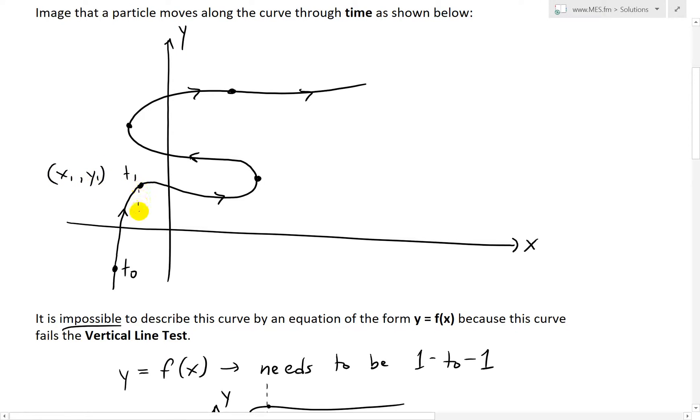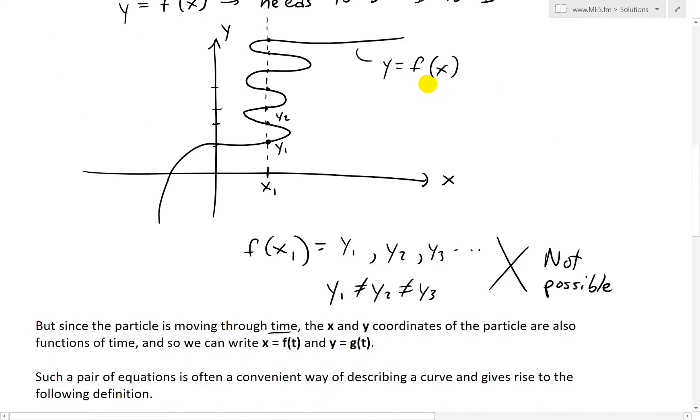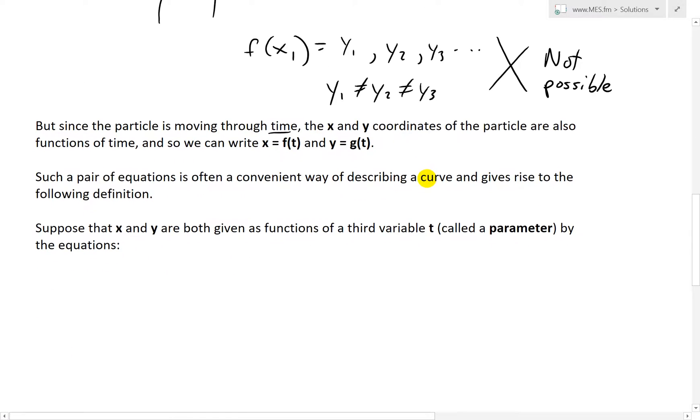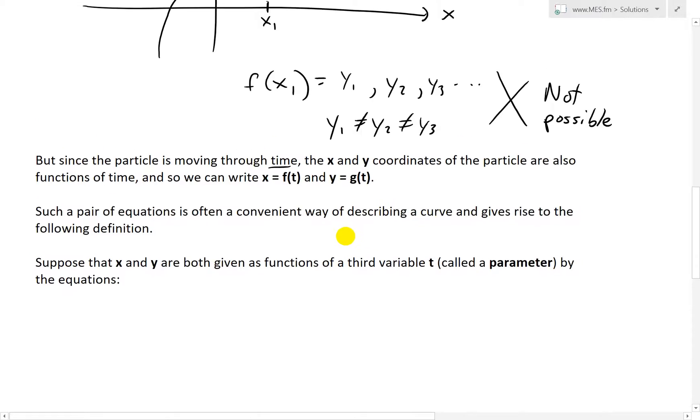At this point, what we have is we can have x1 and y1. And x1 could be over here, and then y1 is over here. So basically, whenever the time changes, we can have different values of x and y. So those are functions. We can make them functions of time. In other words, we can write x equals f(t) and y equals g(t).